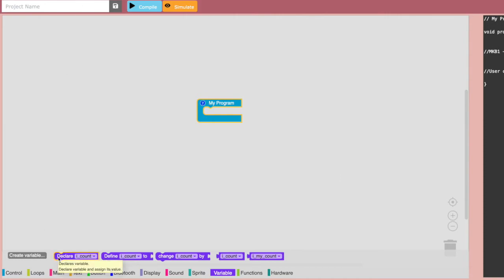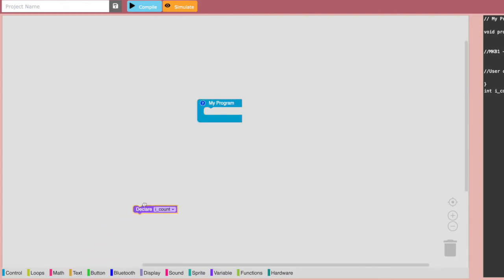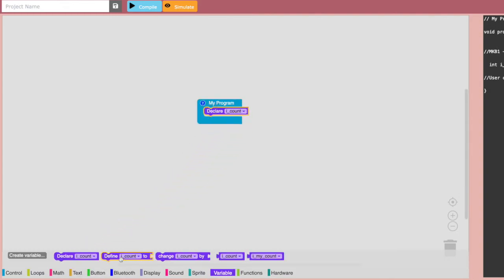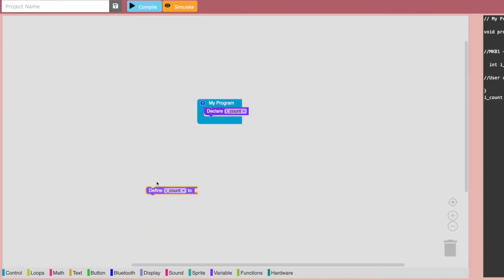Next up are declare and define variable blocks. They almost always come together. You cannot define a variable before declaring it. Declaring means telling the program that you will be using this variable in the program.